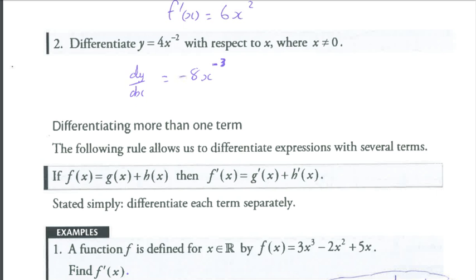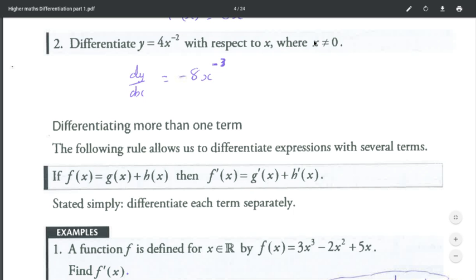Question number 2, differentiate 4x to the power negative 2 with respect to x where x is not equal to 0. Remember we cannot divide by 0 so this statement is in to make the question mathematically correct because x to the power negative 2 really means 4 over x squared. So y equals 4x to the power negative 2. Negative 2 multiplied by 4 is negative 8. Reduce the power by 1, x to the power negative 3. Remember we started with y equals, we write dy/dx.